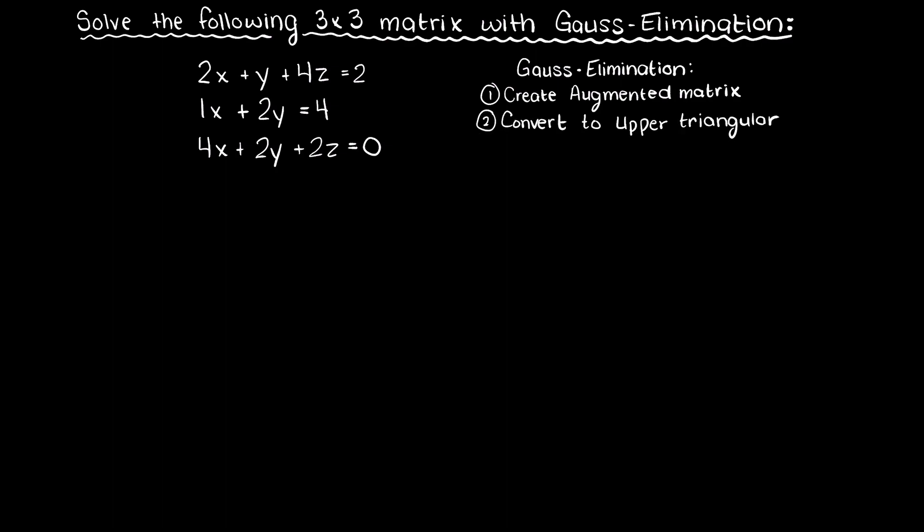On the right here I have placed the steps that we will follow in order to solve this system of equations using Gauss elimination. Through these steps we will create an upper triangular matrix, which looks like this, and then we will use backwards substitution to find the variables that are currently unknown to us.